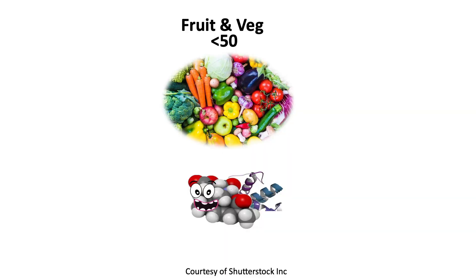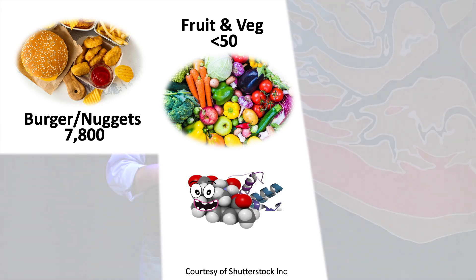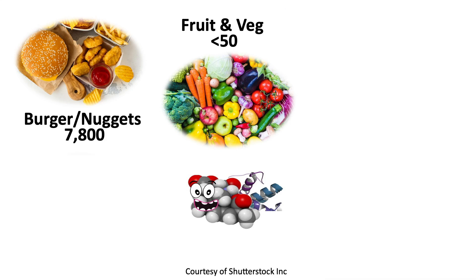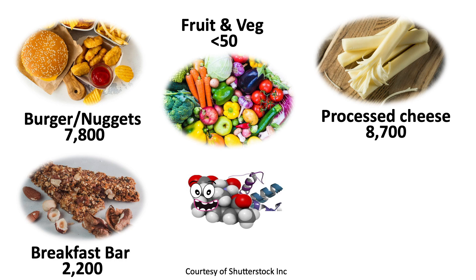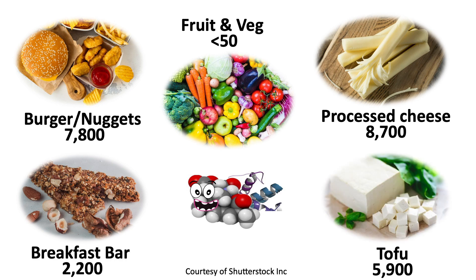Fruit and vegetables are healthy and very low in AGEs — less than 50 AGE units in three ounces. Fast foods like chicken nuggets and burgers are very high: three ounces of a burger has 7,800 AGE units. Processed cheese has around 8,700. Breakfast bars, though low in calories, have around 2,000. Tofu, considered healthy, has around 6,000 AGE units. Butter has 26,000 AGE units per three ounces, margarine has 7,000, and peanut butter has 7,000. You can see straight away that it is very difficult to keep to that 15,000 limit.